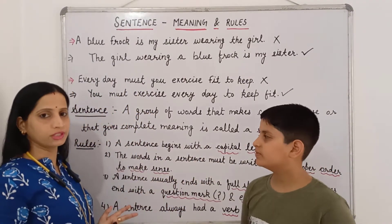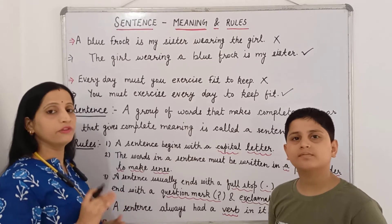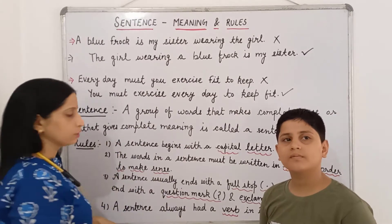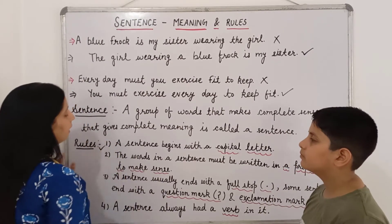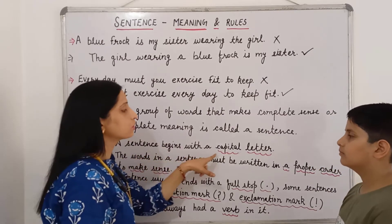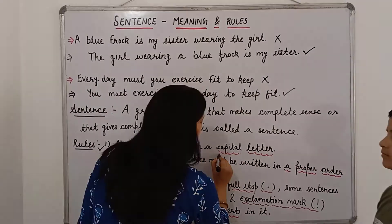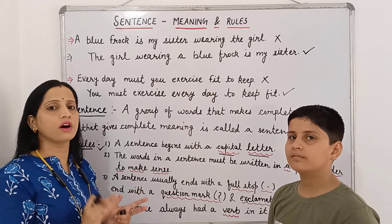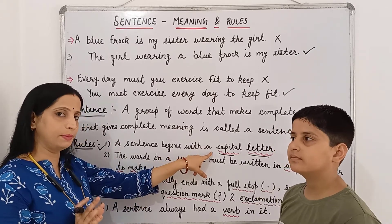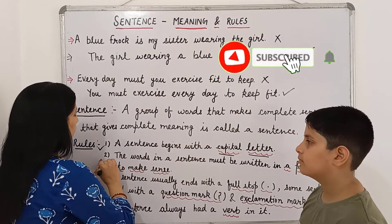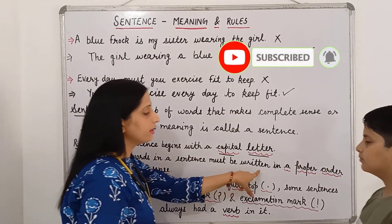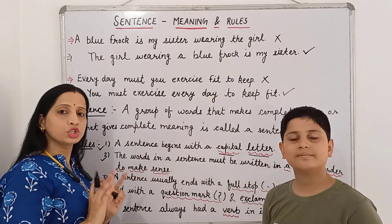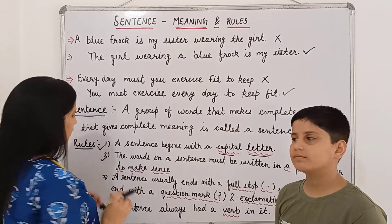Now we will read its rules. What are the rules of a sentence? When we consider a given group of words as a sentence, we follow these rules. The first rule: a sentence always begins with a capital letter — the first letter of the first word of a sentence will always be in capital. The second rule: the words in a sentence must be written in a proper order to make sense.